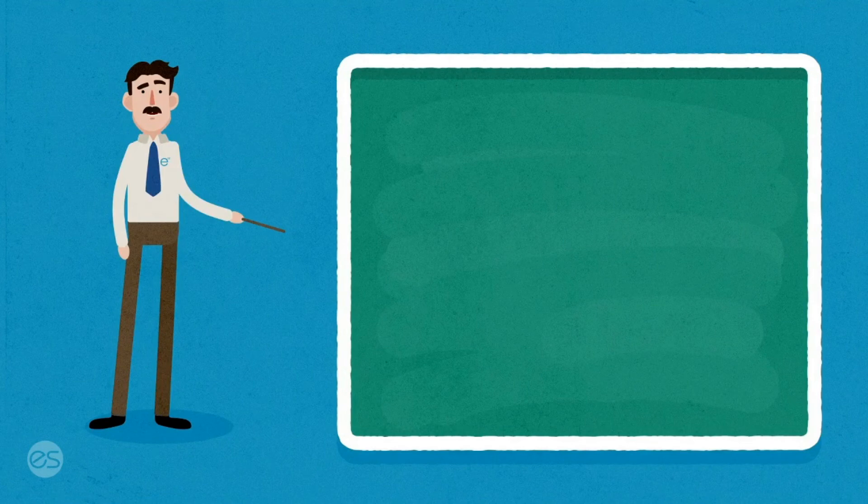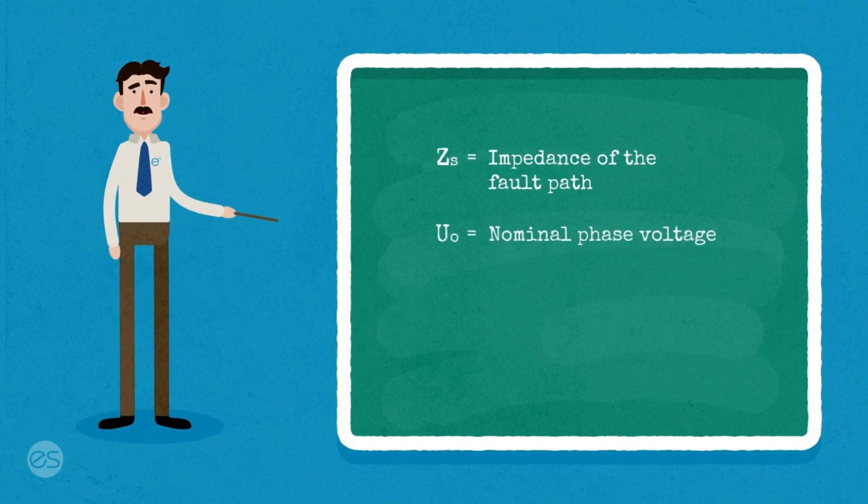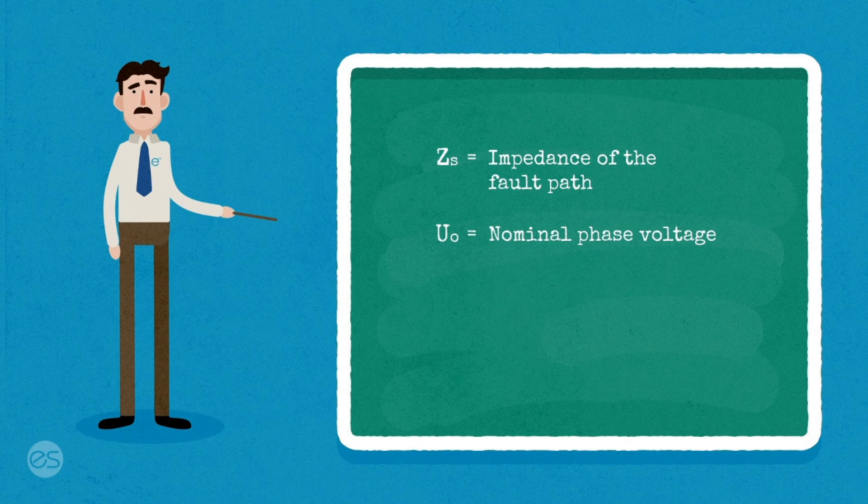AS3000 tells us that Zs equals nominal phase voltage, 230 volts, divided by prospective fault current.